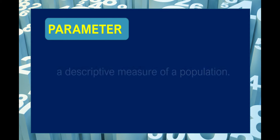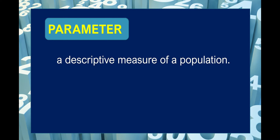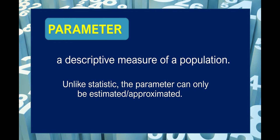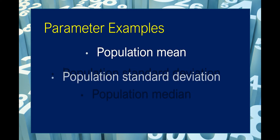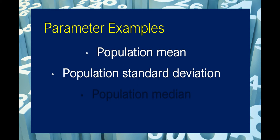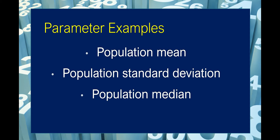A parameter is a descriptive measure of a population. Unlike a statistic, the parameter can only be estimated or approximated. Examples of parameters are the population mean, population standard deviation, and population median.